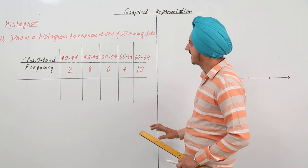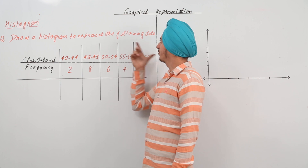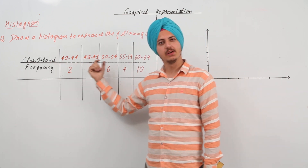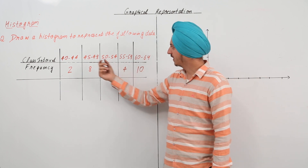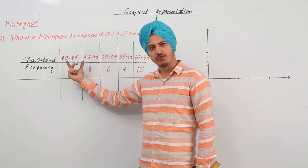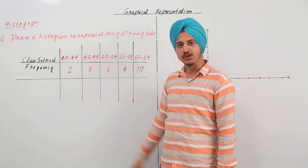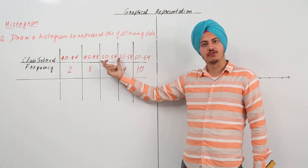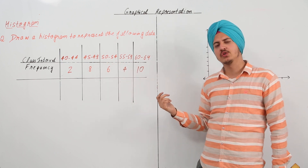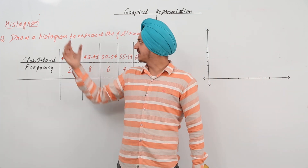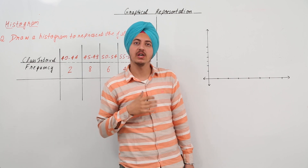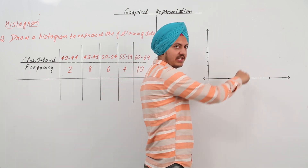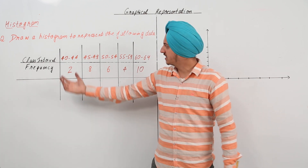The next question in histogram says draw the histogram for the following data. If you see over here, there's a little problem in the class interval. The class interval is from 40 to 44 and the next class interval starts from 45 to 49, and then the next starts from 50. How is this going to be continuous? Because histogram can only be drawn for continuous data — where we leave a histogram, we start the next right from there. So, this cannot be made as is.